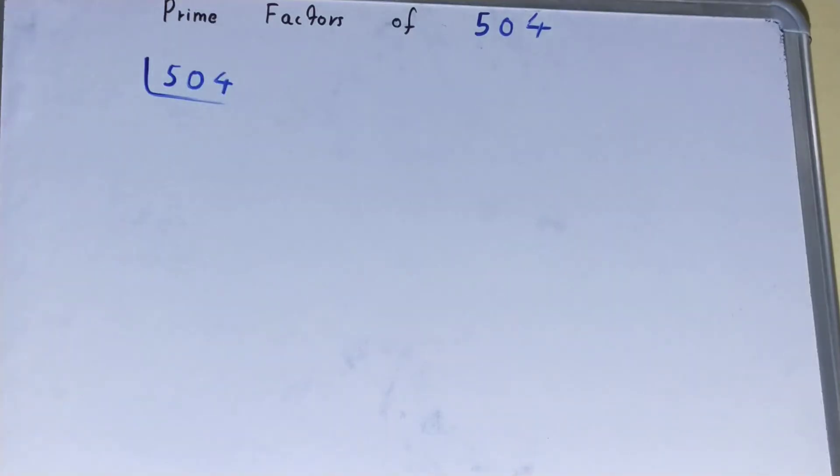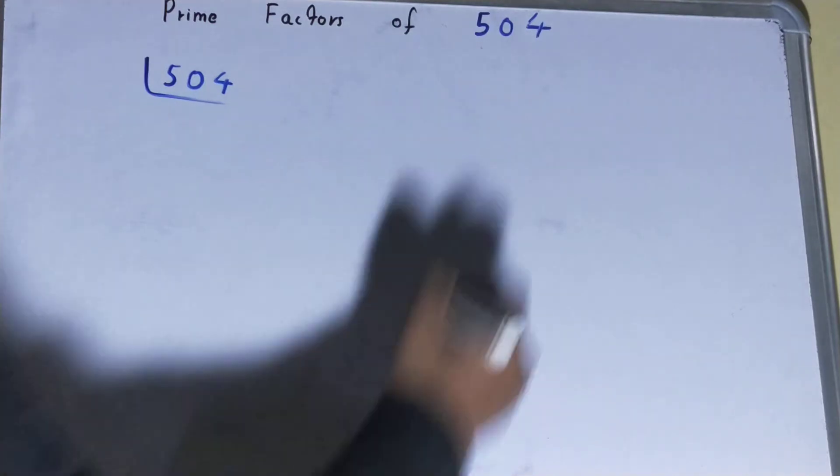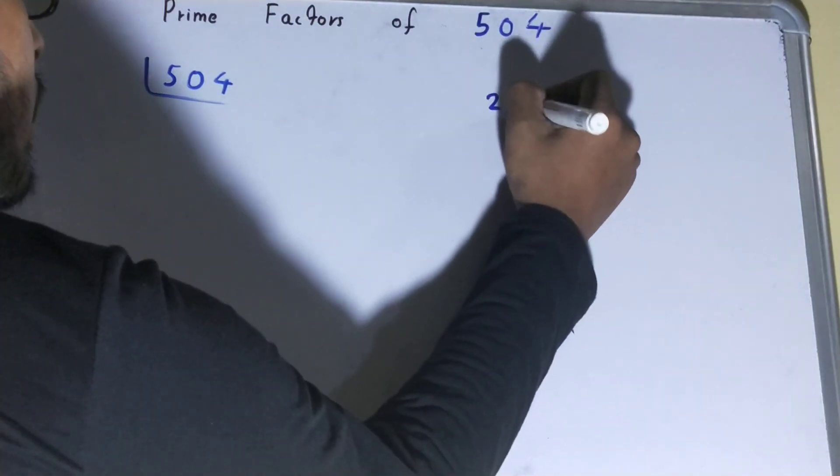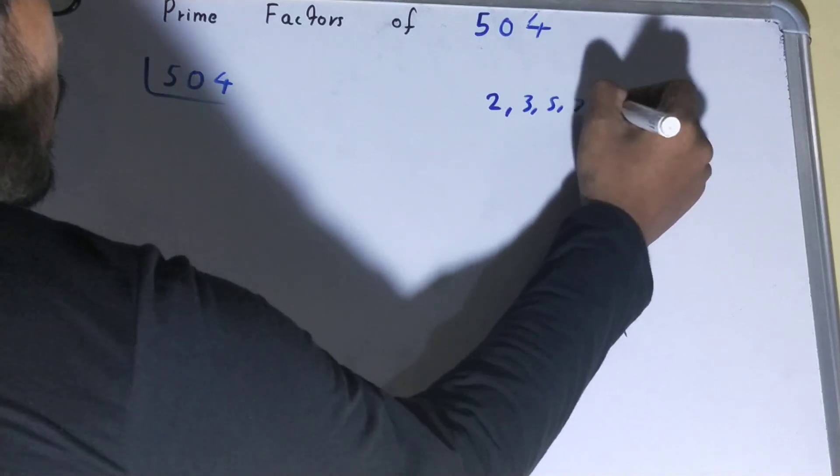Before solving this any further, you must have an idea about what prime numbers are. Prime numbers are numbers that are divisible by one and themselves only, like 2, 3, 5, 7, and so on.